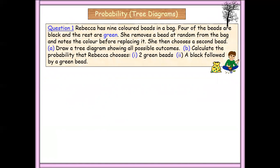Rebecca has nine color beads in a bag. Four of the beads are black and the rest are green. She removes a bead at random from the bag, notes the color, and then replaces it before choosing another one. This is actually the same idea as the previous example, so the working is the same - but let's now look at one where the person doesn't actually replace the cube.